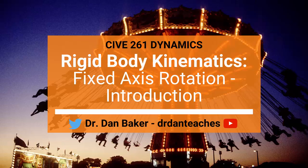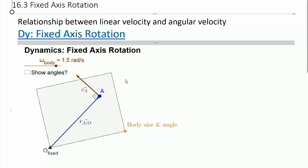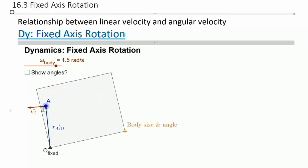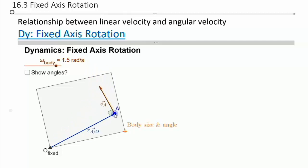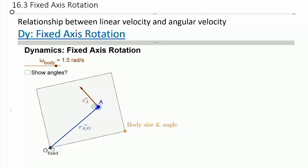Let's transition over to fixed axes rotation. The key thing to notice is that here's my fixed axes point at point O — it doesn't matter where I move point A on this body, the velocity will always be perpendicular to R. That's a fundamental relationship that holds for all fixed axis rotation, as long as this R vector starts at your fixed axis. The direction and magnitude of the linear velocity is based upon our angular velocity.